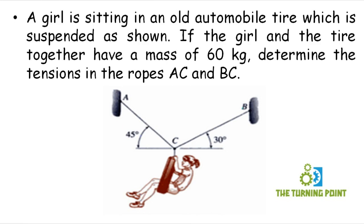If you observe, AC is a string and BC is also a string. Along the strings we can keep tensile force — a string can experience tensile force only. So the two tensile forces along the strings and the weight of the girl along with the tire are all meeting at point C. So we have to consider the free body diagram of point C, or equilibrium of point C.